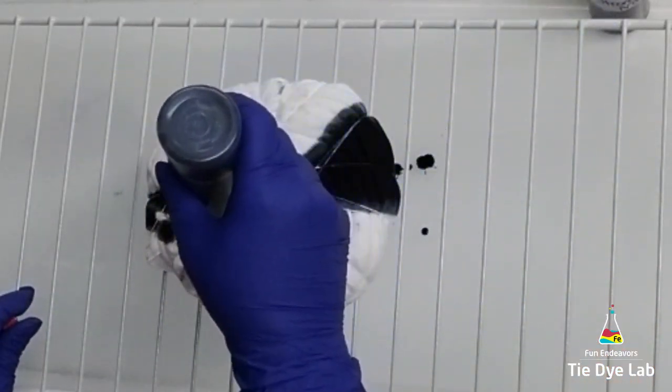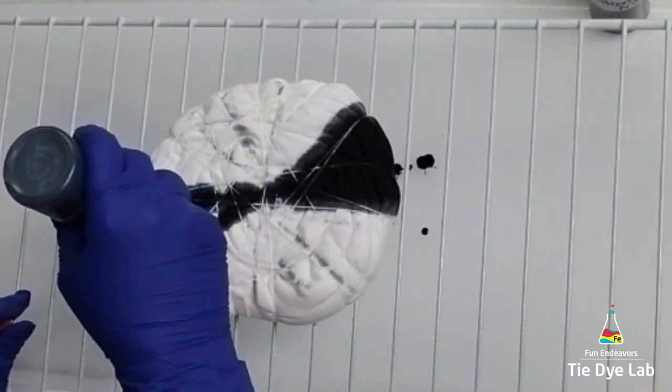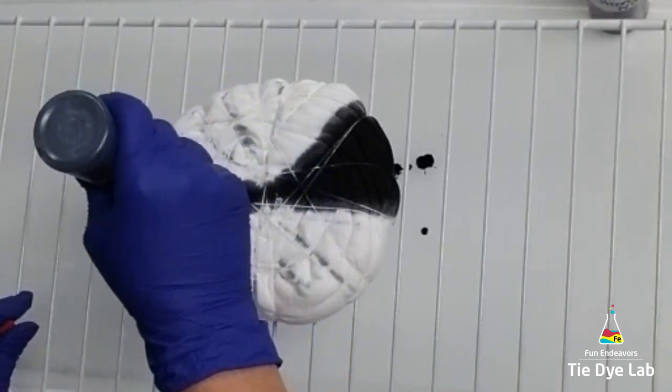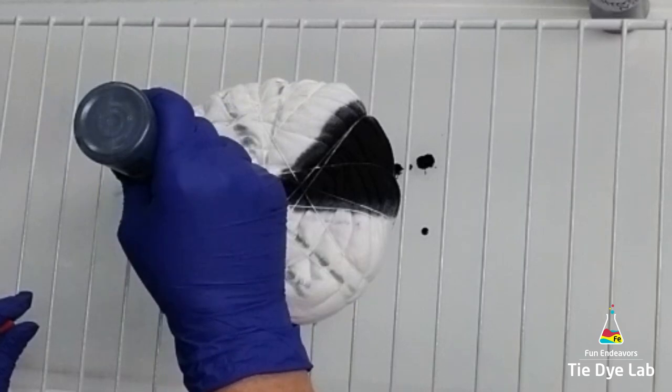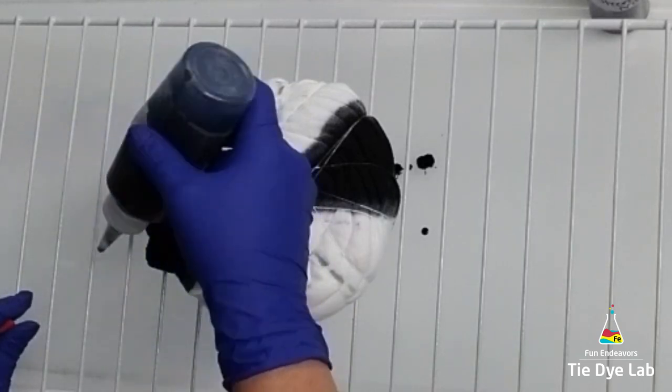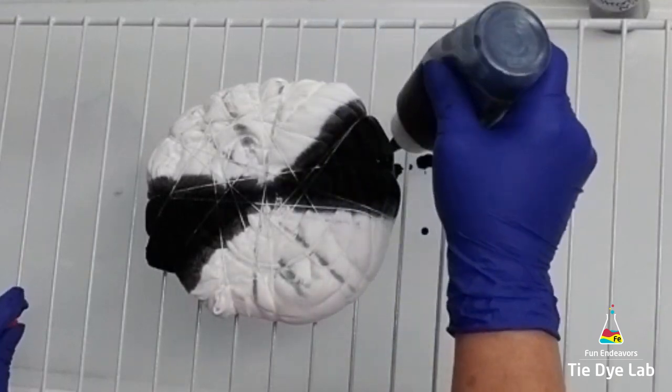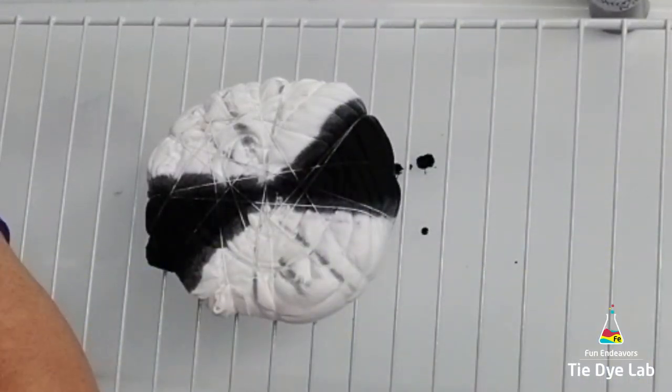Because I have such thick folds in this shirt, I really need to make sure I get it well saturated. However, because I want to leave quite a bit of white, I can't oversaturate my shirt or it's going to consume all of the white areas that I'm trying to leave.